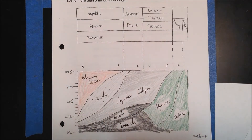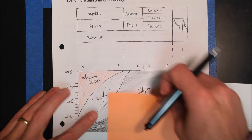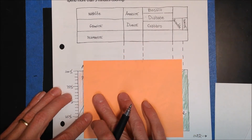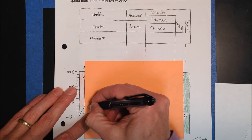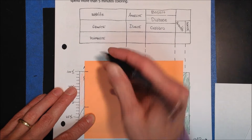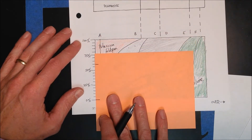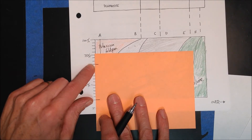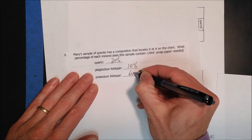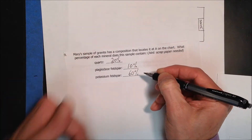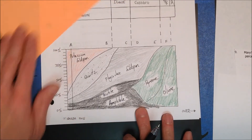Potassium feldspar — if you look, this is a big area, so it's going to be mostly potassium feldspar. This would be a very pink, orangey-pink colored granite. I put the paper along there, mark the top, and doing this carefully — it's not super exact with rocks like this, but we want to get as close as we can. That comes out to 60% potassium feldspar. This doesn't add up to 100% because I didn't include some of the smaller minerals at the bottom, like biotite and amphibole, but that's basically how you do it.